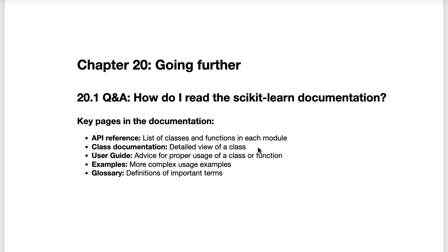The third page type is the user guide — I go here when I need more context about a particular class or function, or advice about how to use it properly. The fourth page type is examples — I go here when I need to see a more complex usage example, since the examples in the class documentation and user guide are purposefully simple. The fifth page is the glossary — I go here when I need to understand a particular term and it's not covered in the user guide.